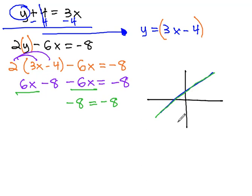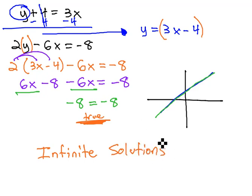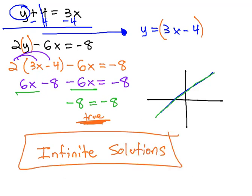If it works in one, it works in the other. If we get a true statement like negative 8 equals negative 8, what this means is we have an infinite number of solutions. There's an infinite number of solutions that make both equations true.